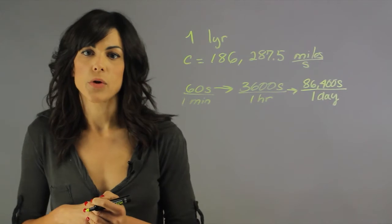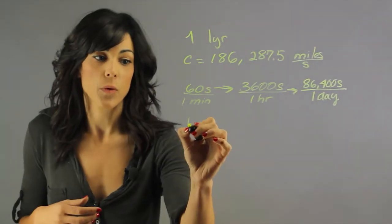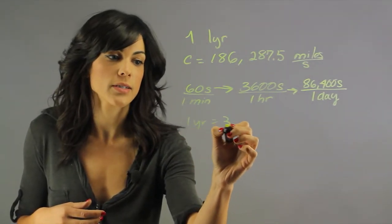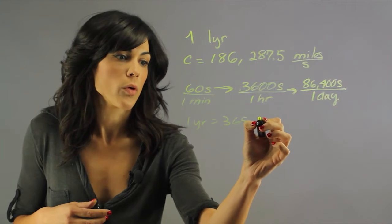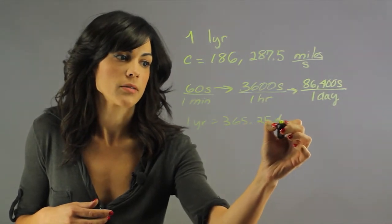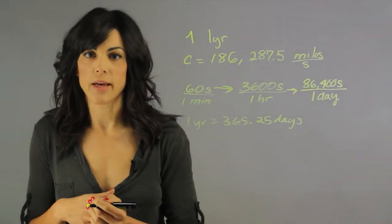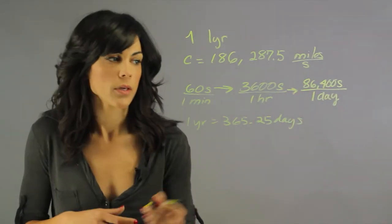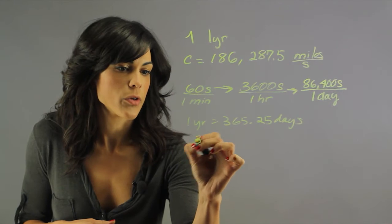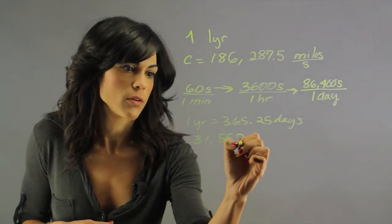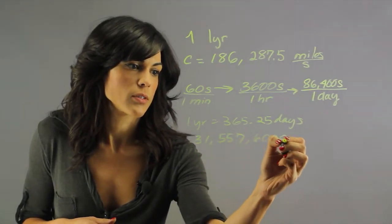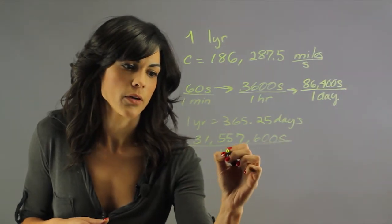We have 365, so one year is 365.25 days. If we multiply this by this, we will get the number of seconds in a year. And this is 31,557,600 seconds in one year.